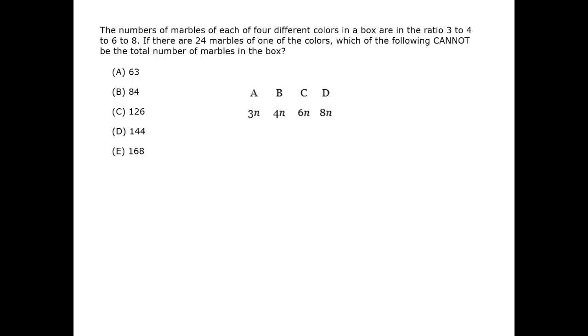The n here conveys the fact that each of the numbers is a multiple of some integer, but we don't know what that integer is. That's the definition of a ratio. We're interested in the total of all the marbles. The total of all the marbles is the sum, 3n plus 4n plus 6n plus 8n. So we have a total of 21n, where n is an integer.